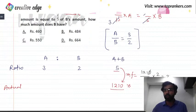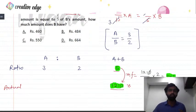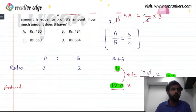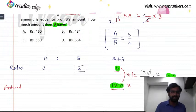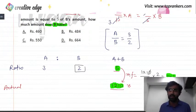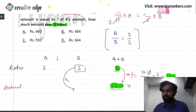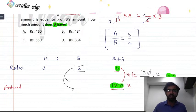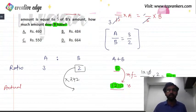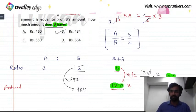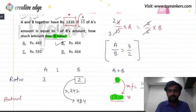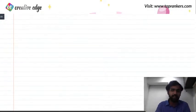The question asks how much amount B has. On the ratio scale, B had 2. To find B's actual value, multiply this ratio value by the multiplying factor: 2 × 242. Since 240 × 2 = 480 and 2 × 2 = 4, we get 484. So B has 484 rupees. I hope you all have understood that clearly, and with this question you've gotten more clarity on ratios and proportions.